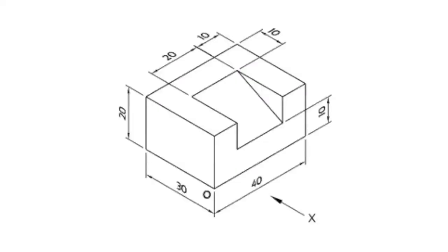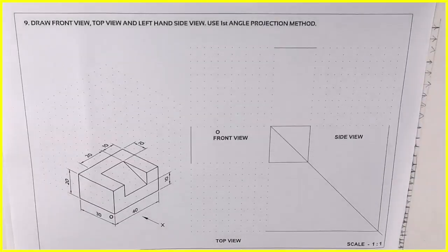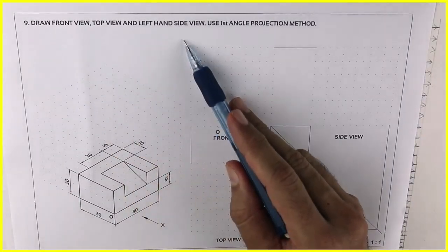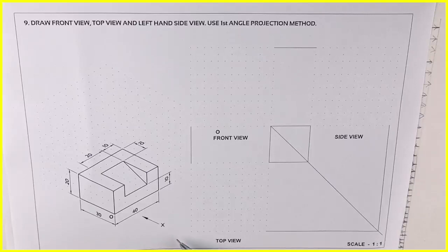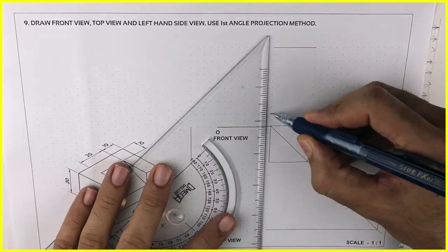Welcome to technical drawing. Today we'll see orthographic projection of this pictorial view. We need to draw front view, top view, and side view using first angle method. Observer will see from here. Length is 40, height is 20, width is 30. So first we need to draw layout.